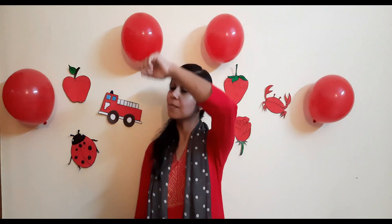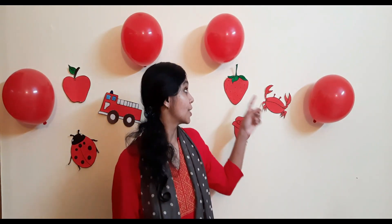And here we have some balloons. Now tell me, what is the same in all these pictures? Yes, they all are red in colour. Red colour apple, red colour ladybug, red colour firetruck, red strawberry, red rose, red crab. And the balloons? Red colour. And what about the man's dress? Red colour. Very good. So today we have learnt the colour red.